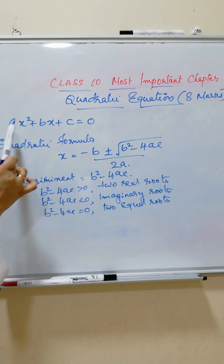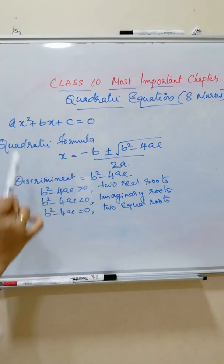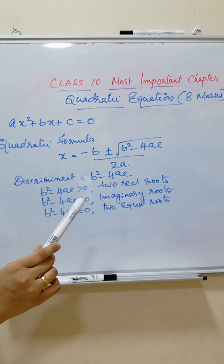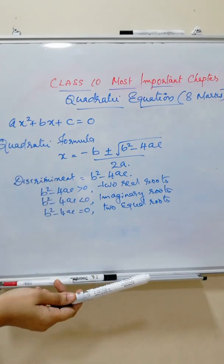What is the quadratic equation? A x square plus b x plus c is equal to 0. We have to find the factors using quadratic formula. That is the one question most important in your board examination.